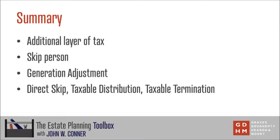There are essentially three types of transfers subject to the generation-skipping transfer tax: the direct skip, which is simply a transfer to a skip person; the taxable distribution, which is a distribution from a trust to a skip person; and the taxable termination, which is when a trust terminates and makes distributions to skip persons. Those are the transfers that are subject to the generation-skipping transfer tax.